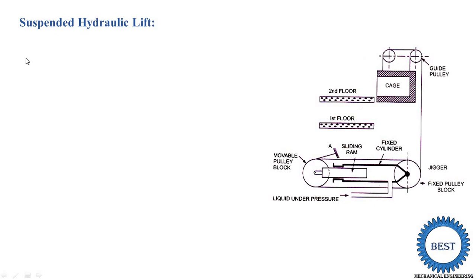What is the meaning of suspension? Something is floating by using some supports. So this cage is suspended on the support of a rope. Here you are seeing this portion — it is a rope, and on this rope our cage is suspended. That is why this lift is known as the suspended hydraulic lift. This type of lift is generally used everywhere right now.